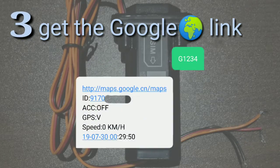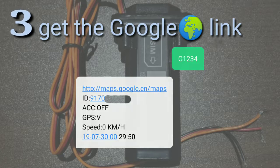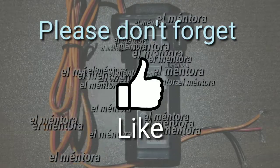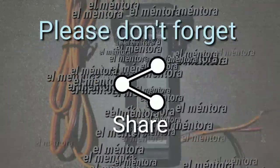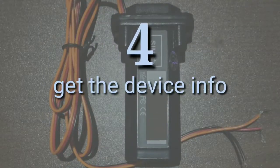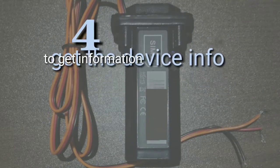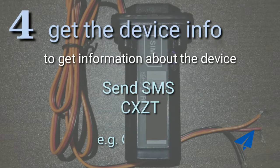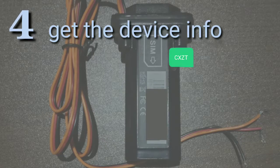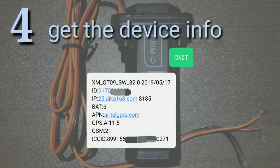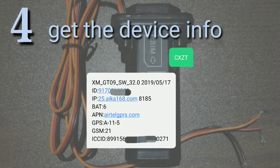The device must respond through an SMS containing the Google Maps information, like device model, device ID, server IP address, battery status, APN, ICC ID, etc.